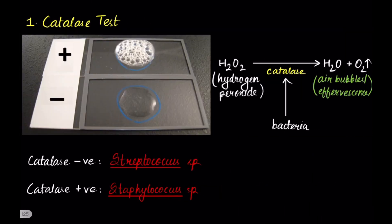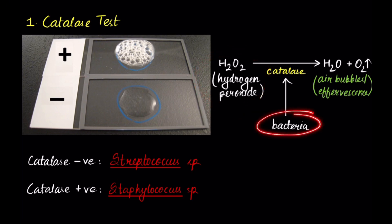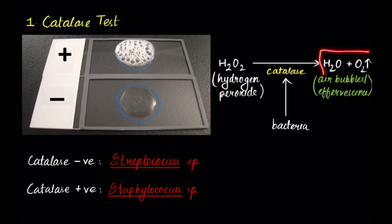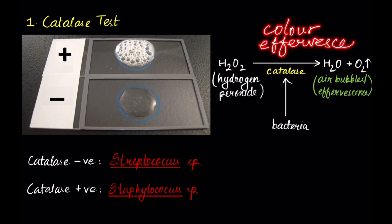So first, what exactly is a biochemical test? In a biochemical test you have a reagent. To this reagent, bacteria is inoculated. This bacteria may or may not produce a certain type of enzyme. If the bacteria produces the enzyme, the enzyme is able to metabolize the reagent and produce byproducts. The production of byproducts is observed in the form of a certain change that occurs in the reagent — either a change in color or effervescence.